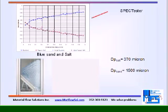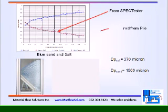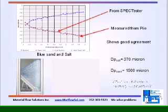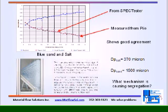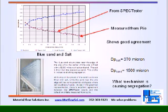In this example, coarse blue sand was mixed with fine salt. The salt accumulates at the top of the pile while the blue sand accumulates at the bottom of the pile. This is indicative of sifting segregation.